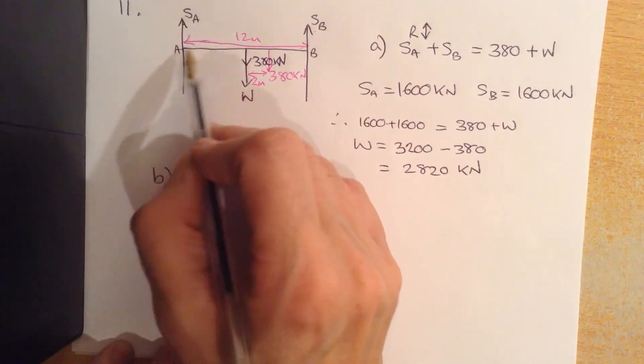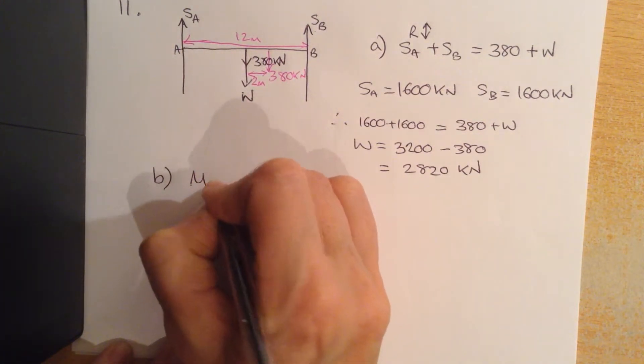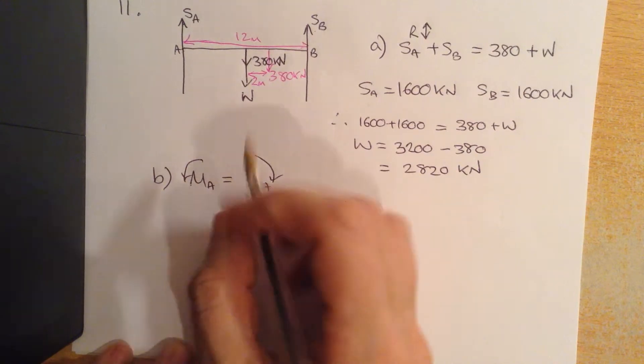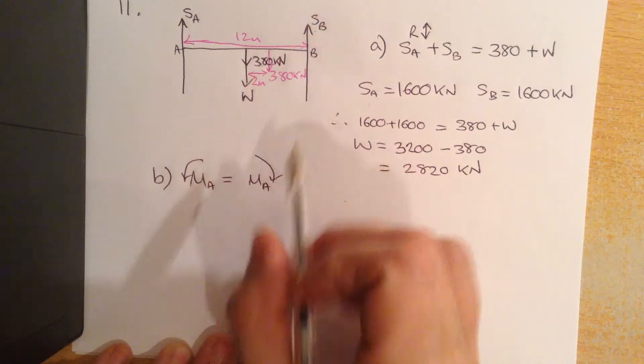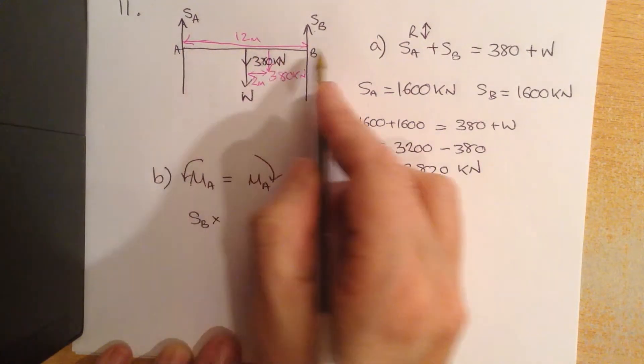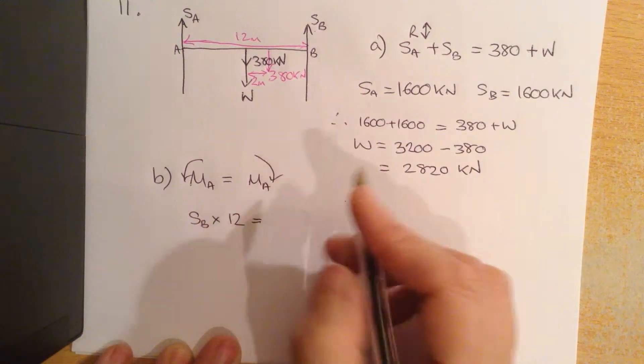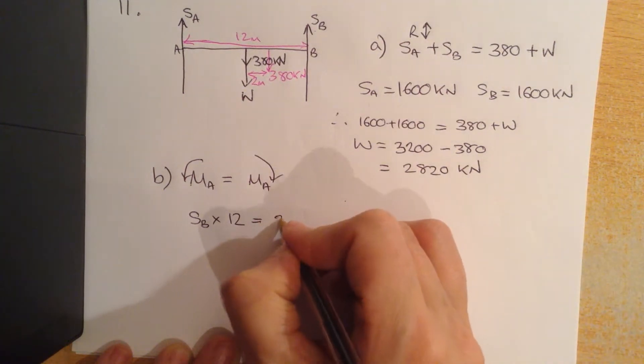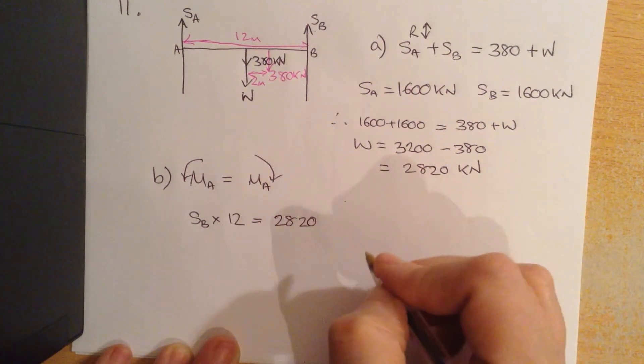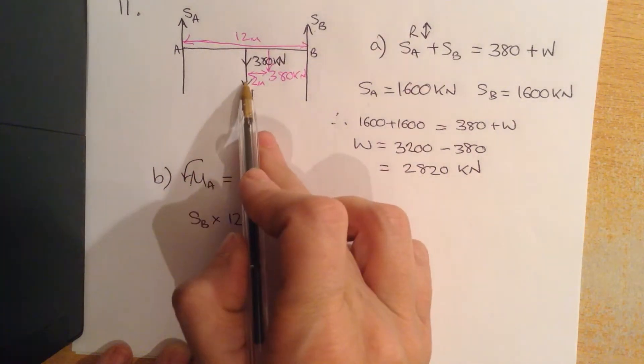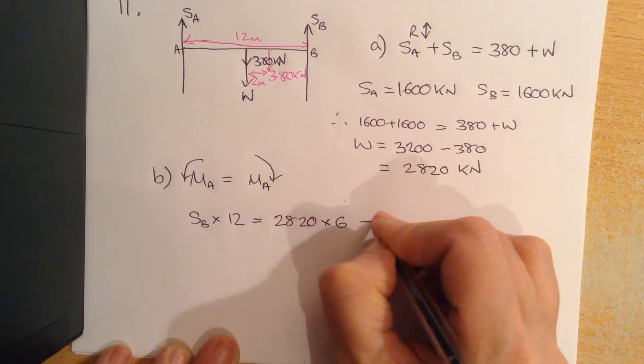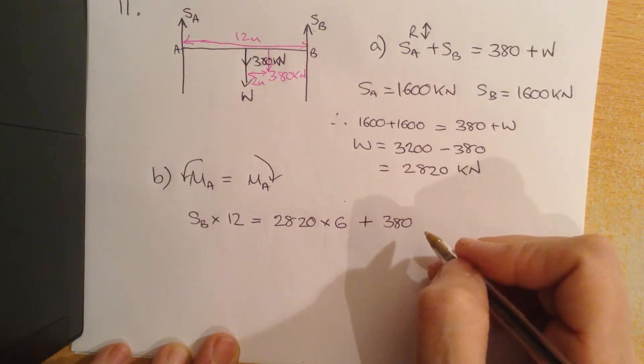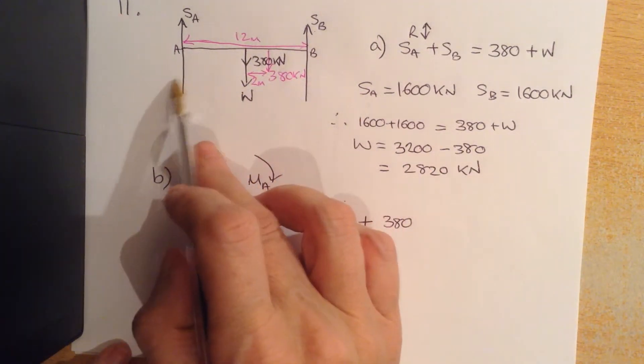so that I eliminate this support force from my equation. So moments about A anticlockwise. The anticlockwise moment is just this support force here, so SB multiplied by the distance 12 is going to be equal to the weight which we've calculated, 2820 kilonewtons. That distance there is half of 12 so it's going to be 6, plus the 380 kilonewtons at a distance 6 plus 2, which is 8.